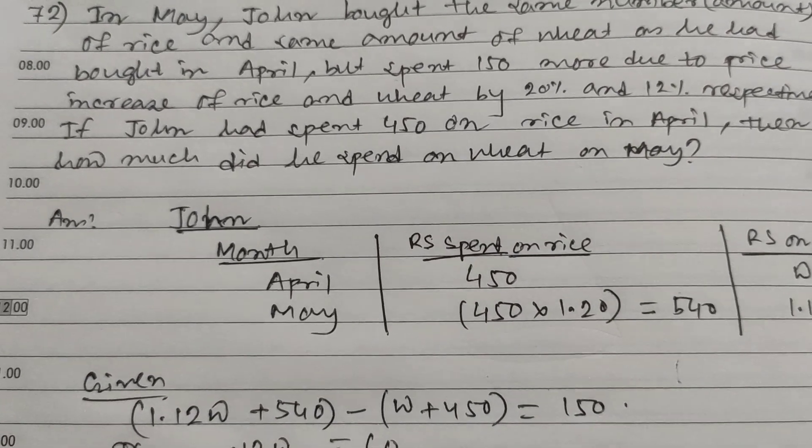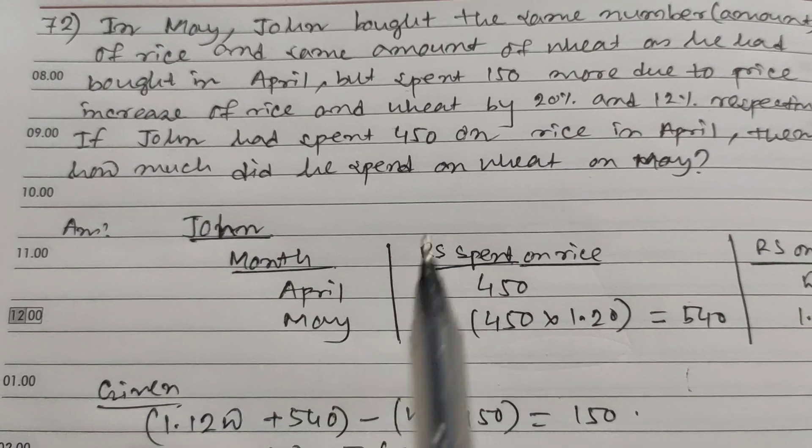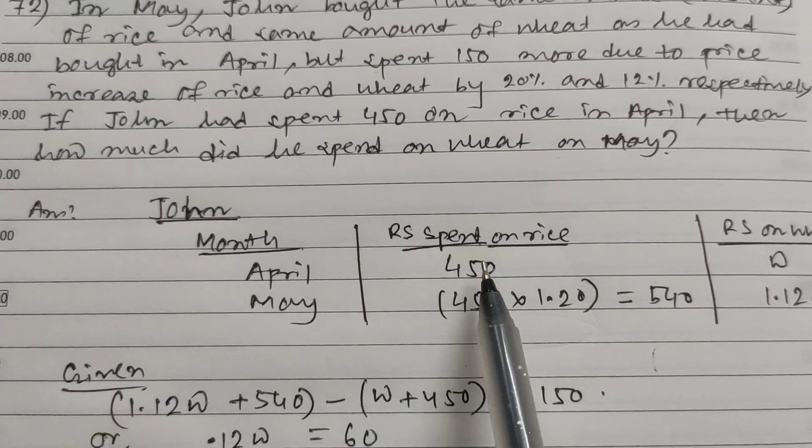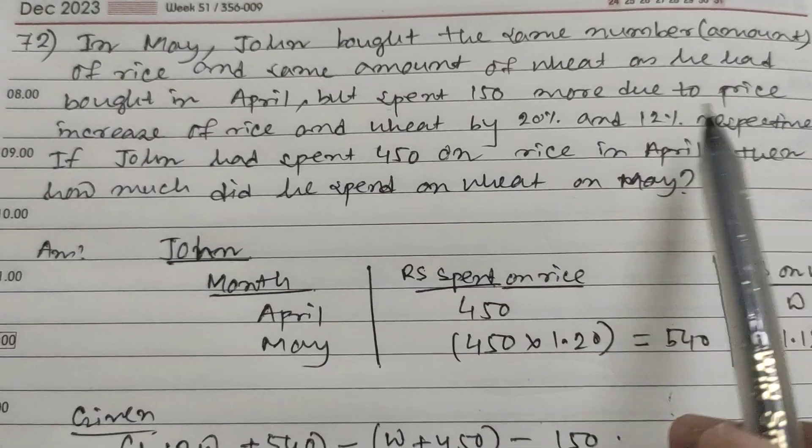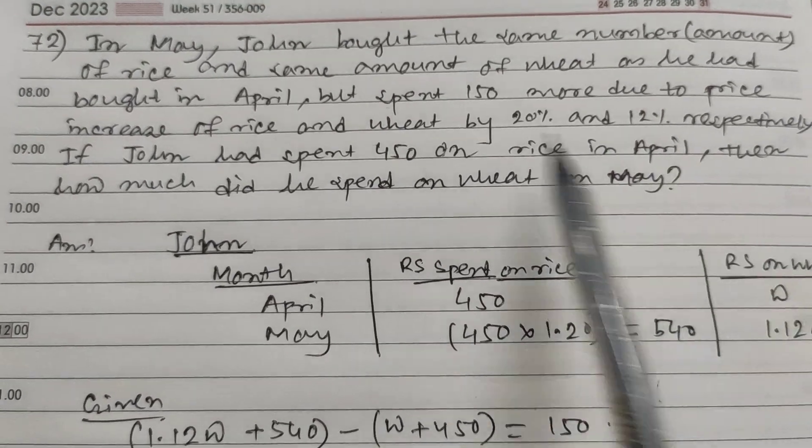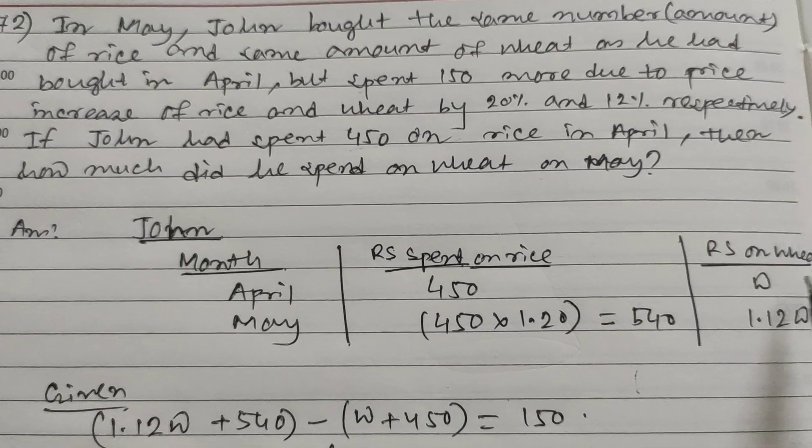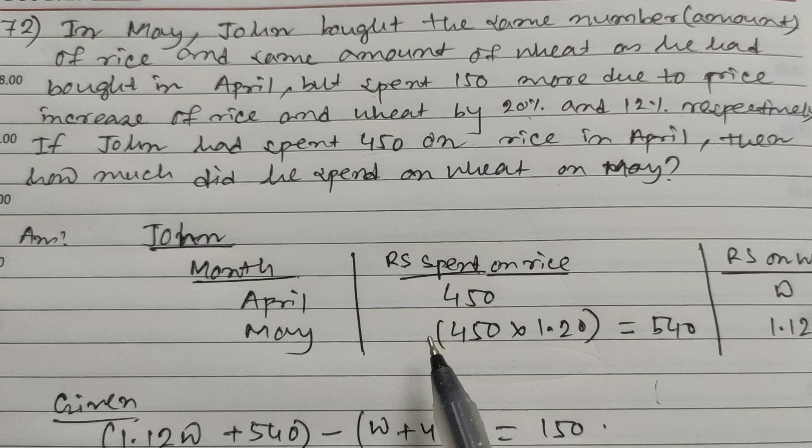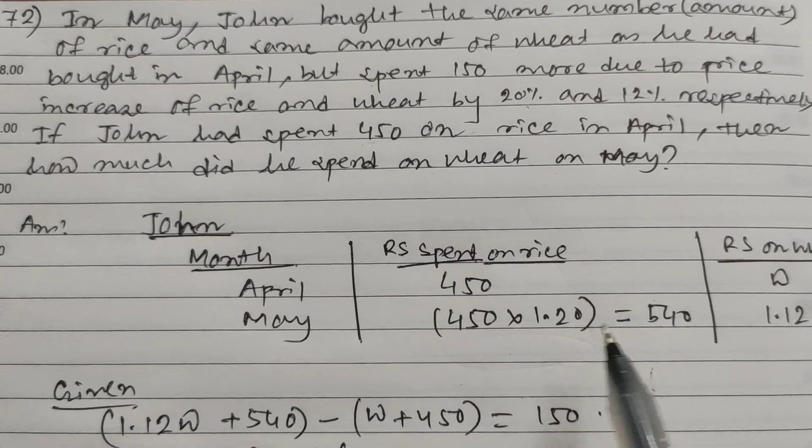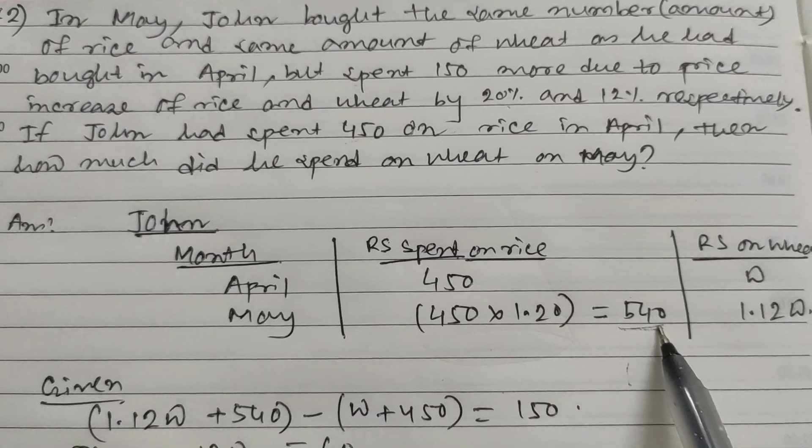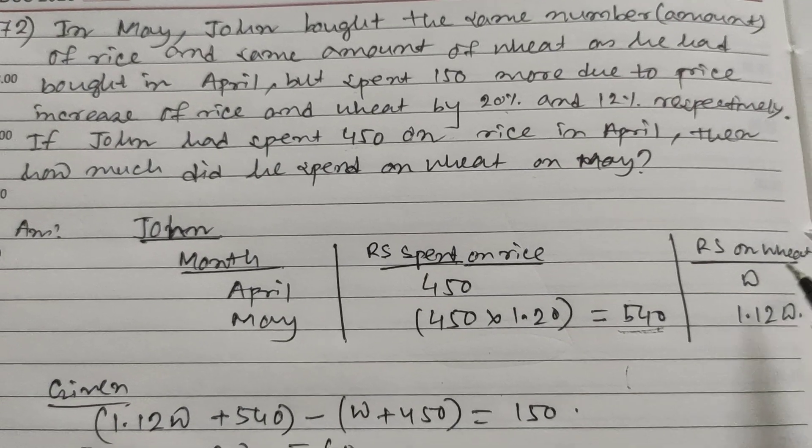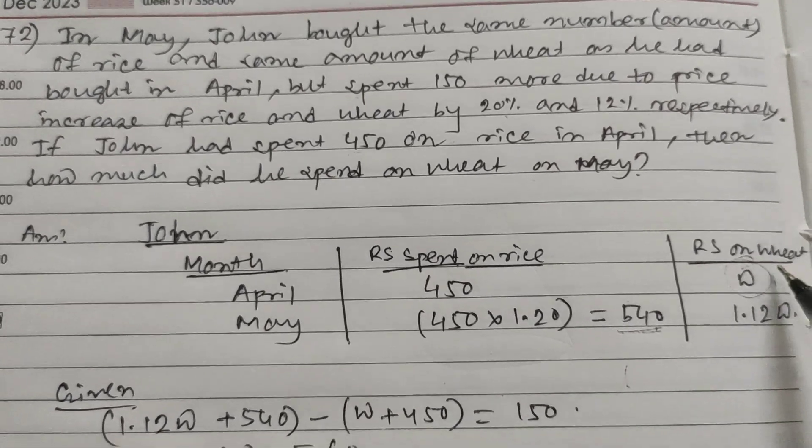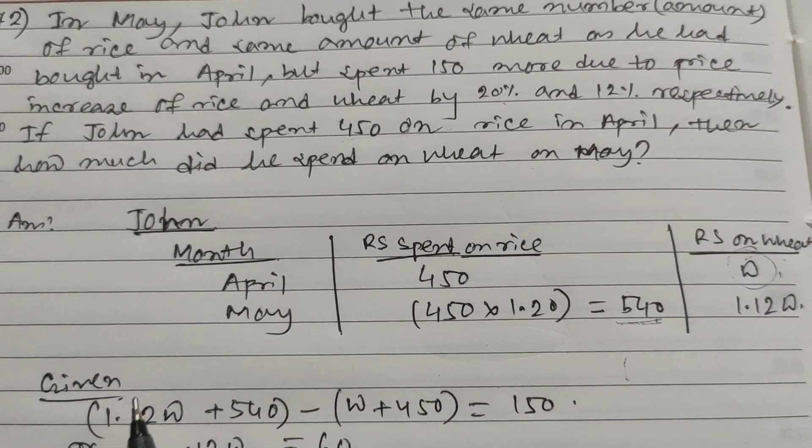I have made a table. In April, John spent 450 rupees on rice. In May, the price rose by 20%, so 450 times 1.20 equals 540. Suppose he spent w rupees on wheat in April, so in May the price is 1.12w.